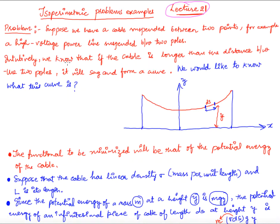This is a famous example. Suppose we have a wire of length L — you see it everywhere, like electrical wires and so on — and this wire is suspended between two poles. This is pole 1 and this is pole 2. The length of the wire is fixed at L, and we would like to know what curve this wire forms when suspended between the two poles.